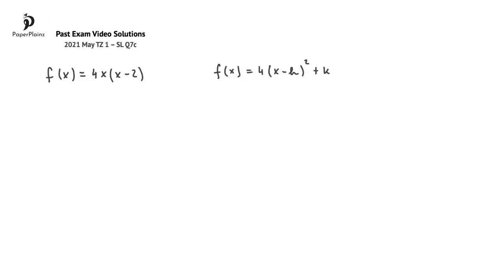In this question we are told that fx can also be expressed as 4 times x minus h squared plus k, and we have to find the value of h and k.